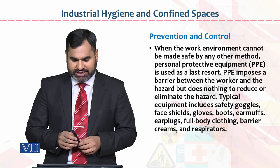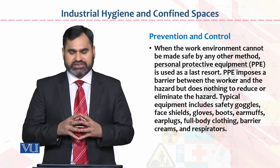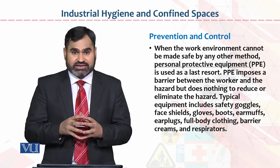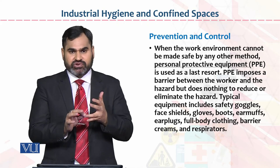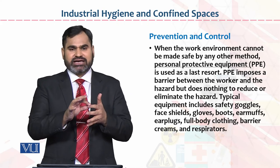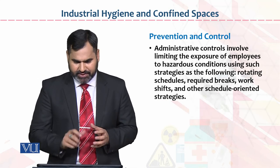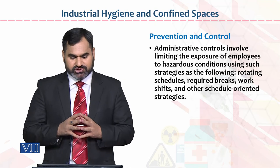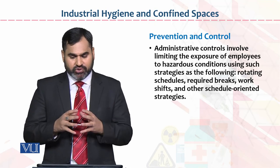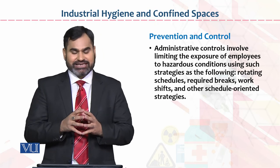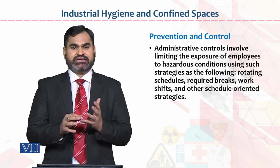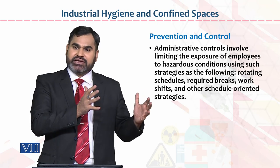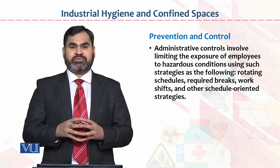Prevention and control में सबसे ज़्यादा focus personal protective equipment पर है। PPE wear करने से और SOPs follow करके disease, बेमारियों, irritation, या किसी serious problem से बचा जा सकता है। Administrative control की importance भी बहुत ज़्यादा है — इसमें rotation, required breaks, work shifts, और other schedule-oriented strategies शामिल हैं। Employee को rotation में काम लिया जाए, proper breaks दी जाएं, तो chances हैं कि employees अच्छा perform कर सकते हैं।